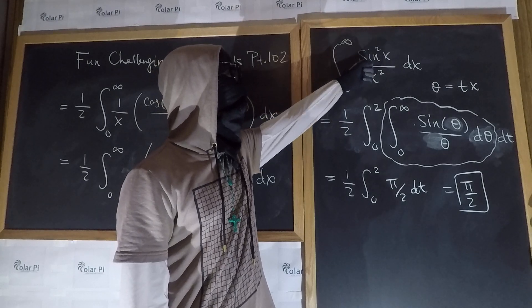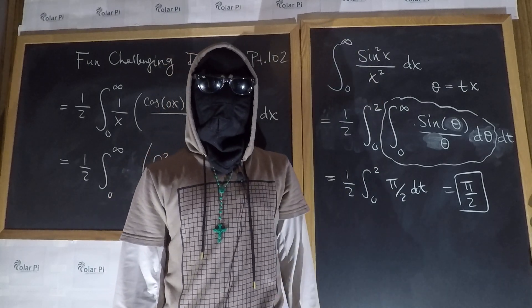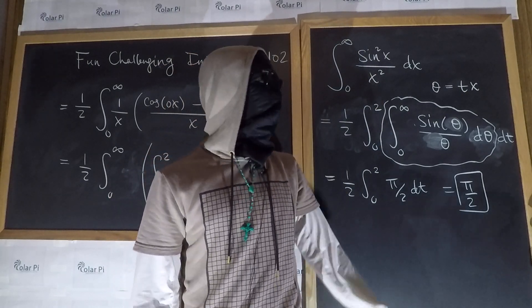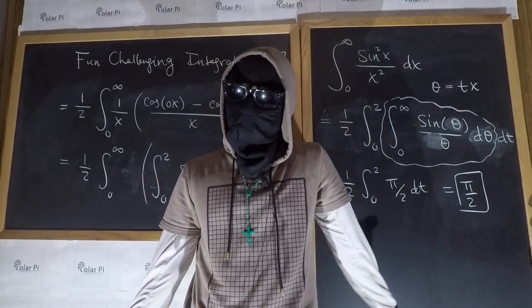half of this integral is going to be pi over two itself. So, our final answer is pi over two. Wait, so, we squared sine and x and did the integral. And it's the same as the integral where sine and x aren't squared.